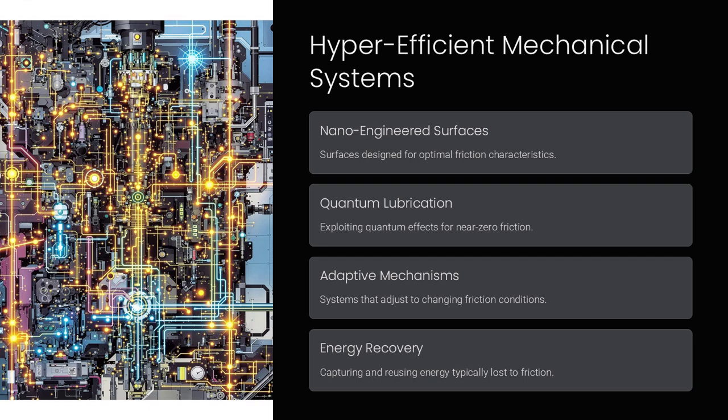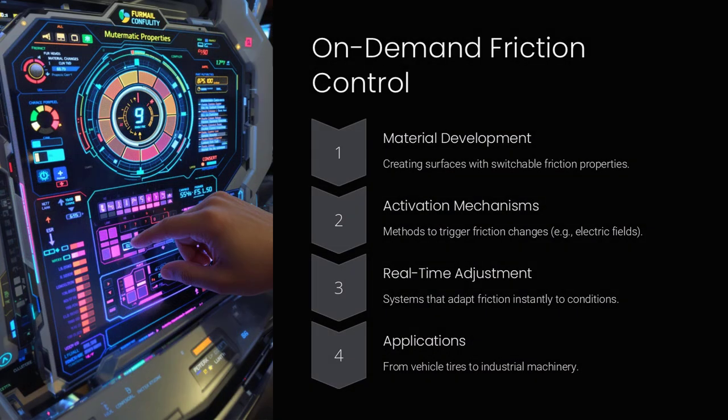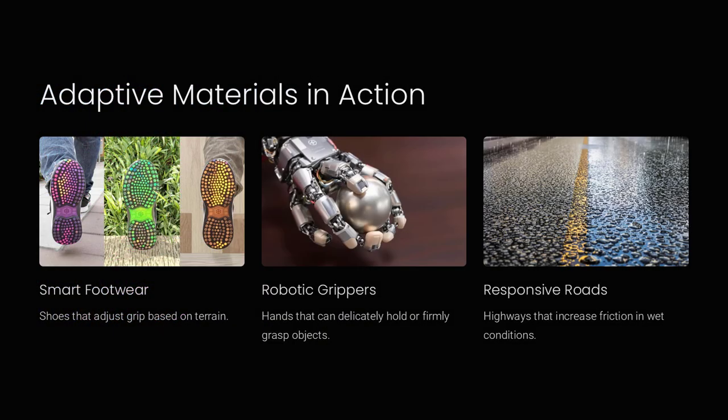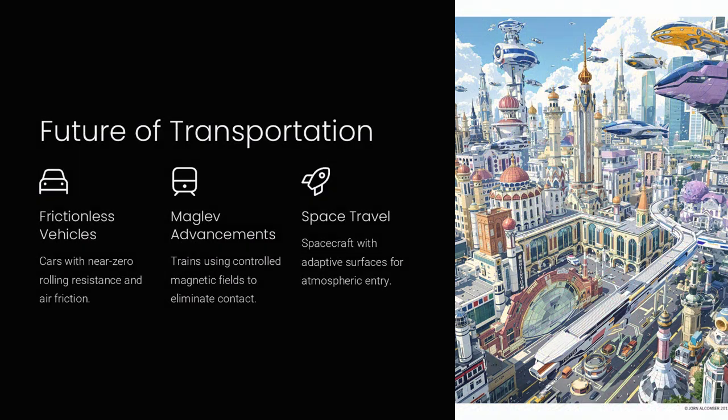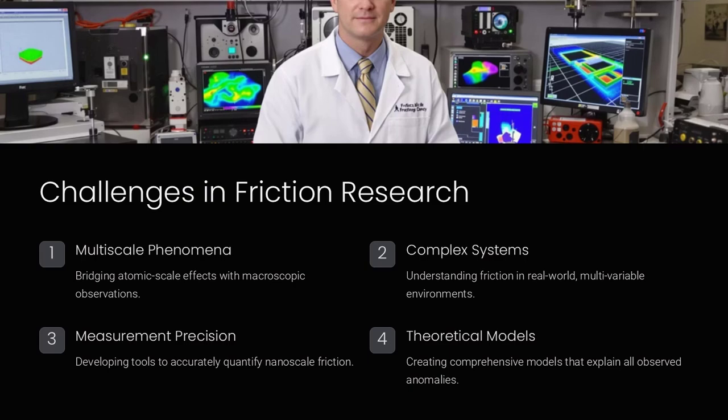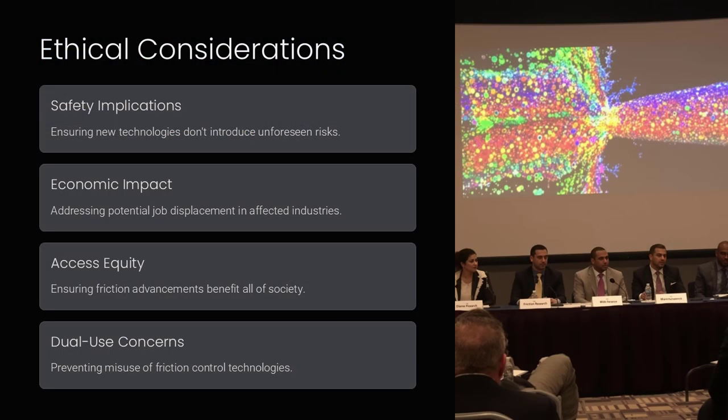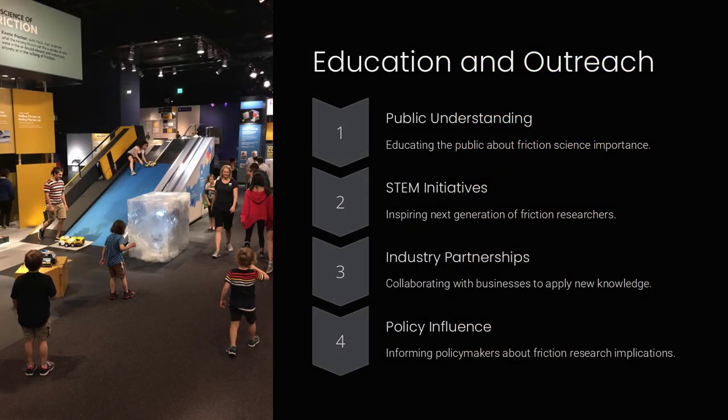Friction anomalies aren't just theoretical curiosities, they have practical implications for nanotechnology, earthquake prediction, aerospace engineering, and advanced manufacturing. If we could fully understand these deviations, we might develop near-frictionless engines, earthquake-resistant structures, or hyper-efficient mechanical systems. Could the future of material science lead to the ability to control friction at will, turning it off and on as needed?